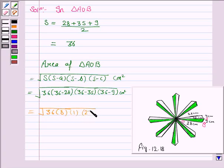Which is equal to under root of 36 into 8 into 1 into 27. And on simplifying this comes out to be equal to 36 root 6 cm².